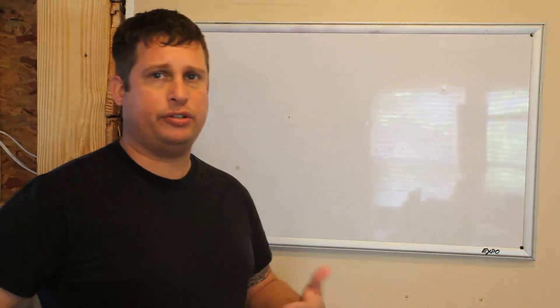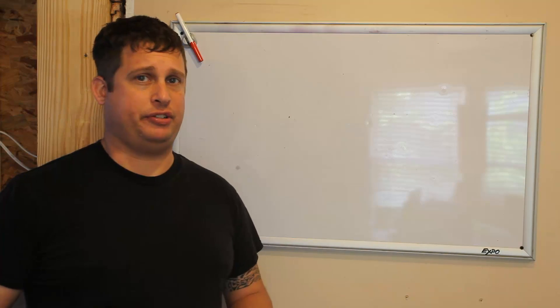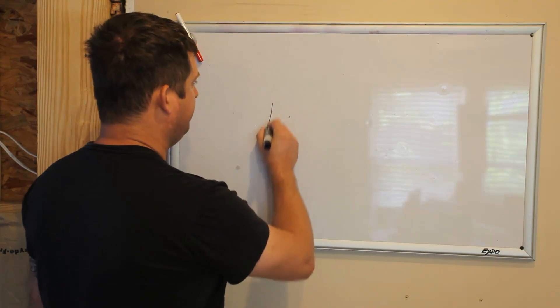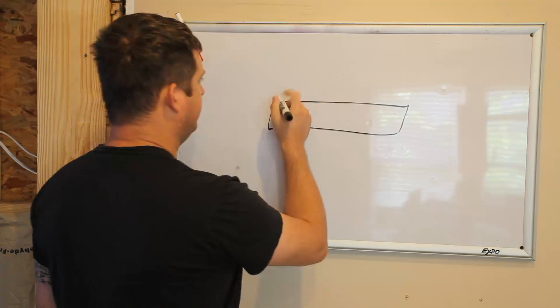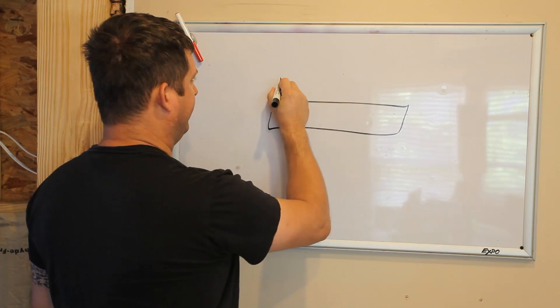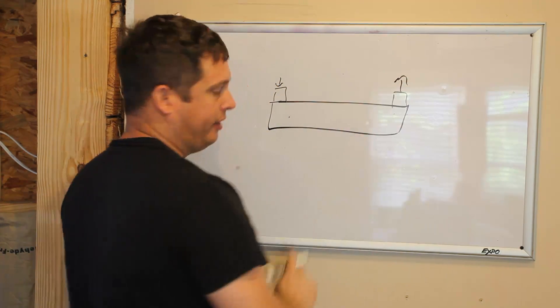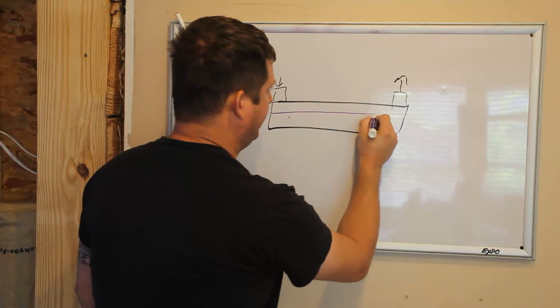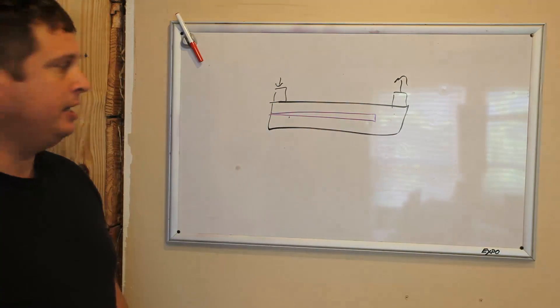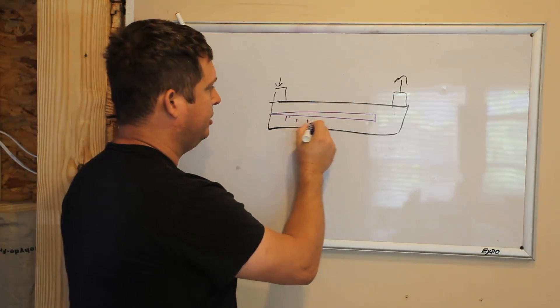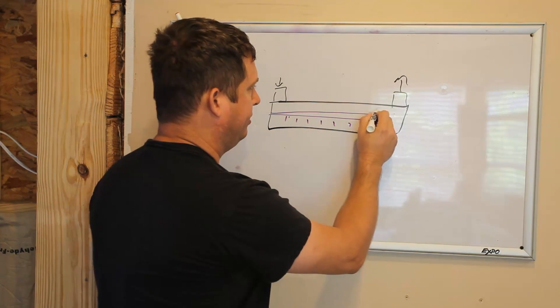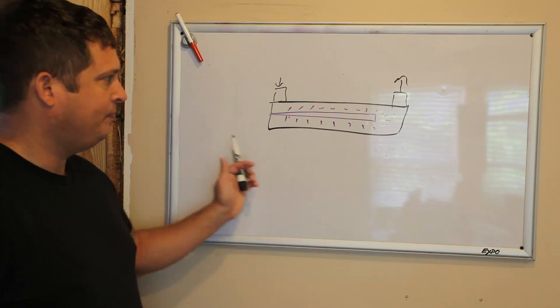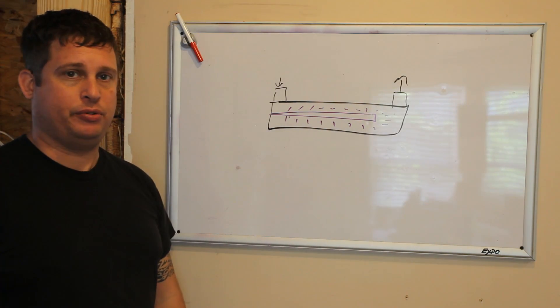So the first thing I want to do is talk a little bit about what a UV filter is. A UV filter is a container with an inlet and an outlet that has a UV light source inside it. The UV light source emits ultraviolet light and the ultraviolet light kills life forms that pass through in the water column.